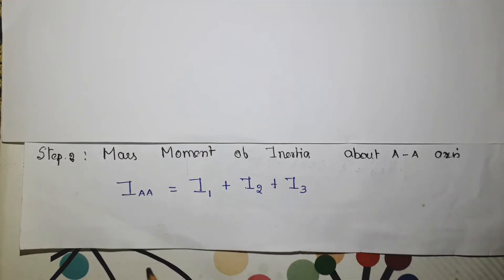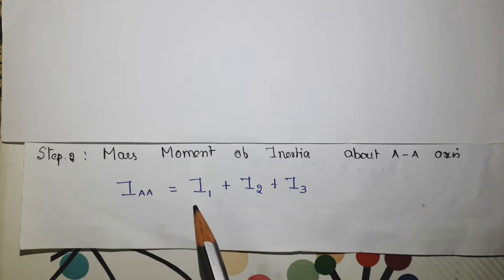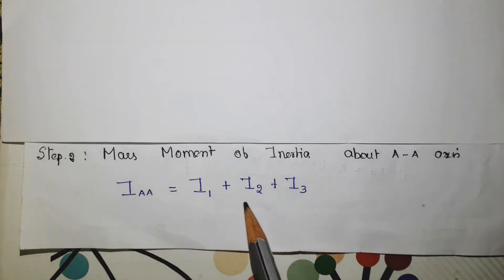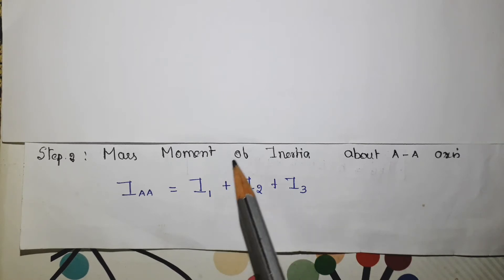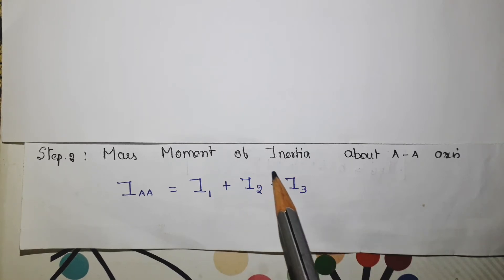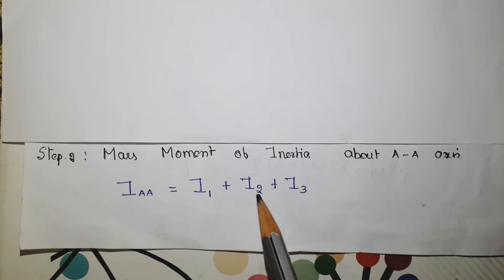The moment of inertia about the AA axis equals I1 plus I2 plus I3, where I1, I2, and I3 are the moments of inertia about the individual sections. We have to find them individually and then add them.